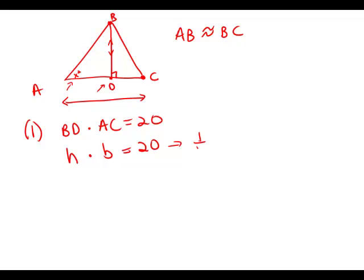Well, divide that by two. One half base times height equals 10. So that information by itself is sufficient to answer the question to allow us to find the area of the triangle.